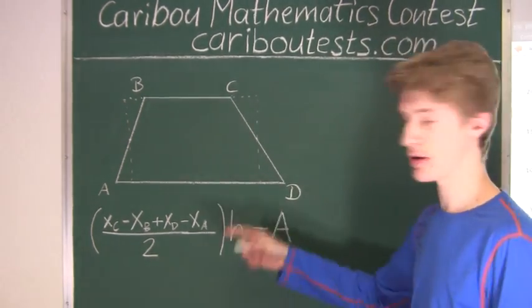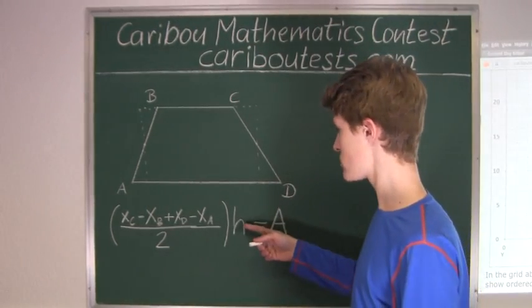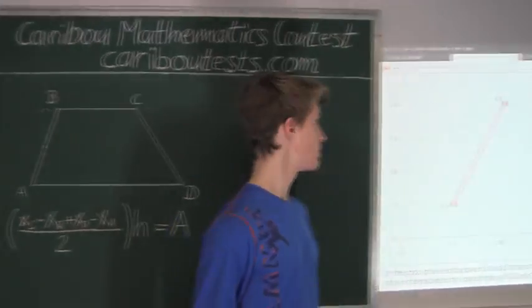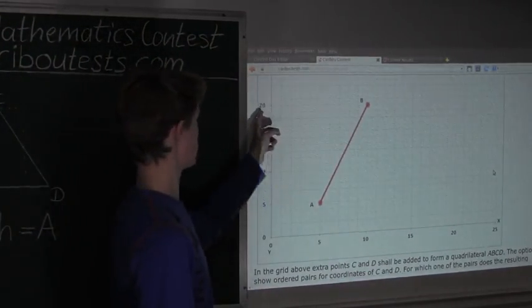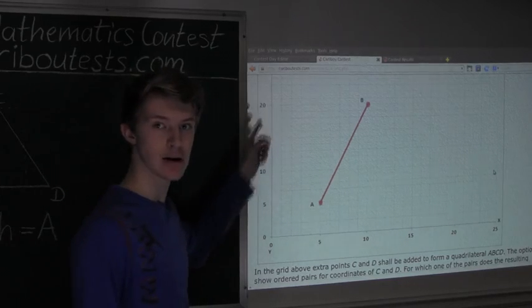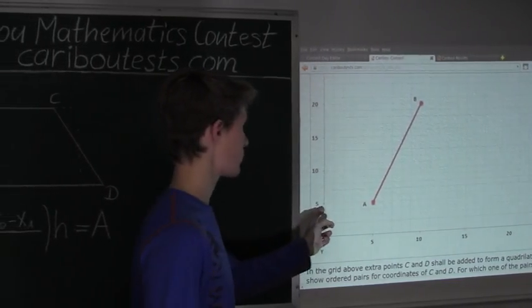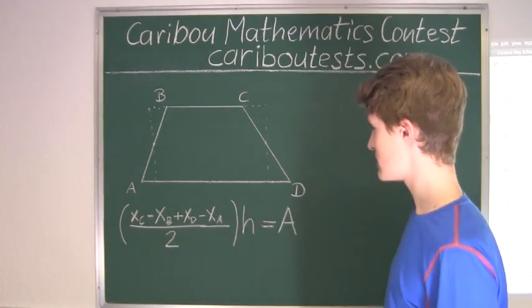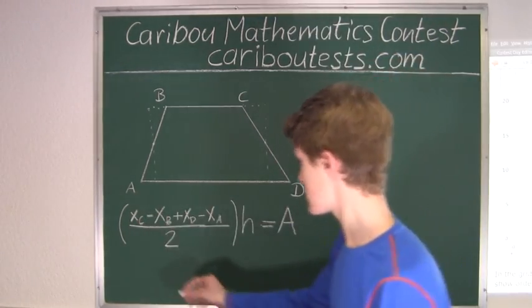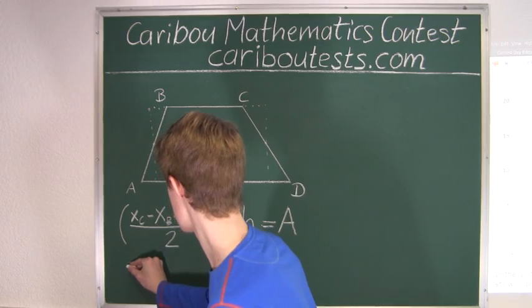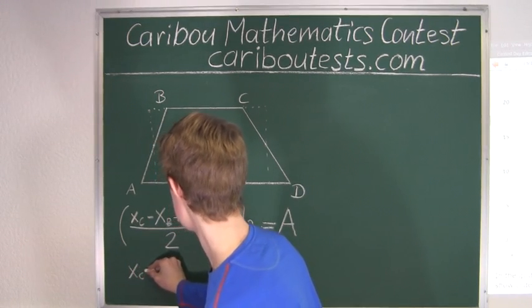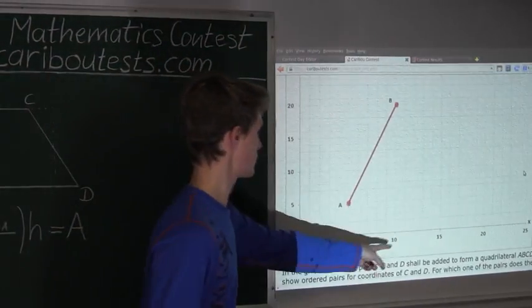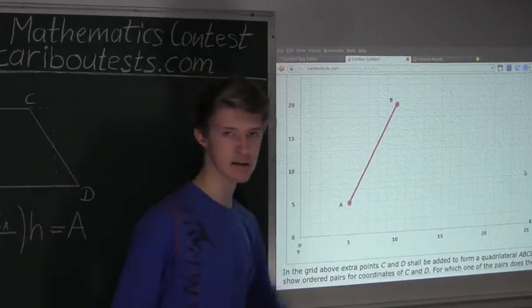Alright, now we can rewrite this. We know that the h, the height from the question is 15, because we can see the top point, the y-coordinate is 20, and for the bottom point, the y-coordinate is 5, so 20 minus 5 is 15. So this is 15. Now we have xC minus, and then xB, we know, is 10. The x-coordinate of point B is 10.